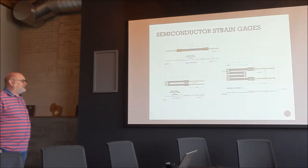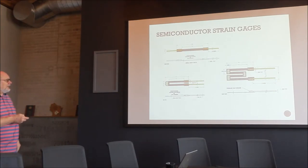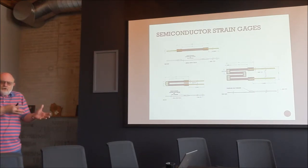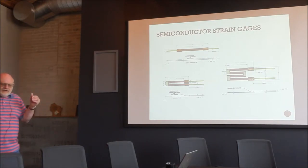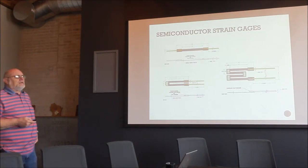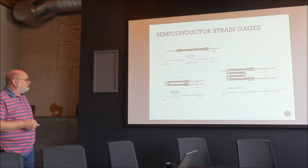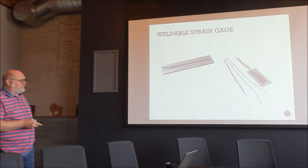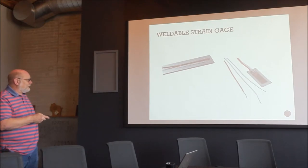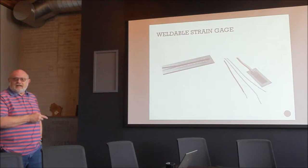Semiconductor gauges are just what they sound like — semiconductor elements with piezo-resistive properties, making them extremely sensitive. While a foil gauge has a gauge factor of two, semiconductor gauges can have gauge factors of 100 to 1000. The downside is instability and white noise — they're overly sensitive and require excellent instrumentation. Weldable gauges use foil or wire embedded in shim stock that can be spot-welded to the surface, though the standoff distance creates a strain transfer issue, especially in bending.